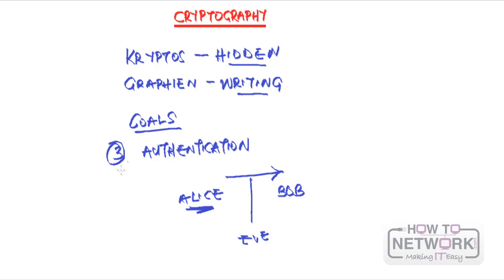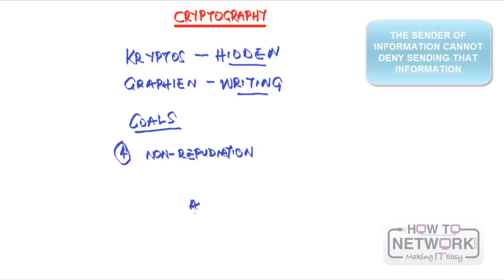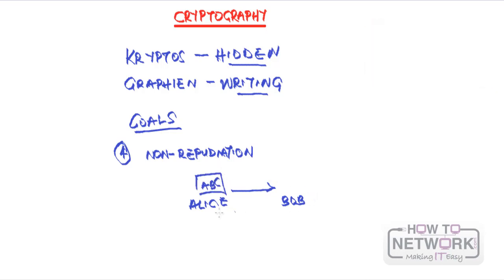The fourth goal of cryptography is non-repudiation. This just means that if Alice sends a message to Bob, Alice should not be able to deny that she's the one who sent the message. The message A, B, C can have some form of identity saying it was sent from Alice. So non-repudiation means the user who sends a message will not be able to deny at a later date that they are the ones who sent it.